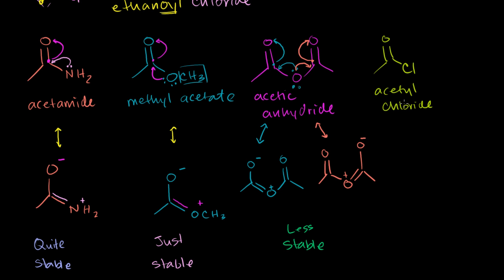Finally, you have acetyl chloride. There really is no resonance structure here because chlorine is so electronegative that it is very unlikely to give away an electron. So acetyl chloride gets no stabilization from resonance. This makes it the least stable of the carboxylic acid derivatives we're looking at.